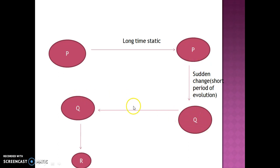Then again long time stasis, Q remains Q. Then after a long time static, it will suddenly convert into R. That is the sudden change, again short period of evolution. In one line you can see that stasigenesis means long time static, short period of evolution.